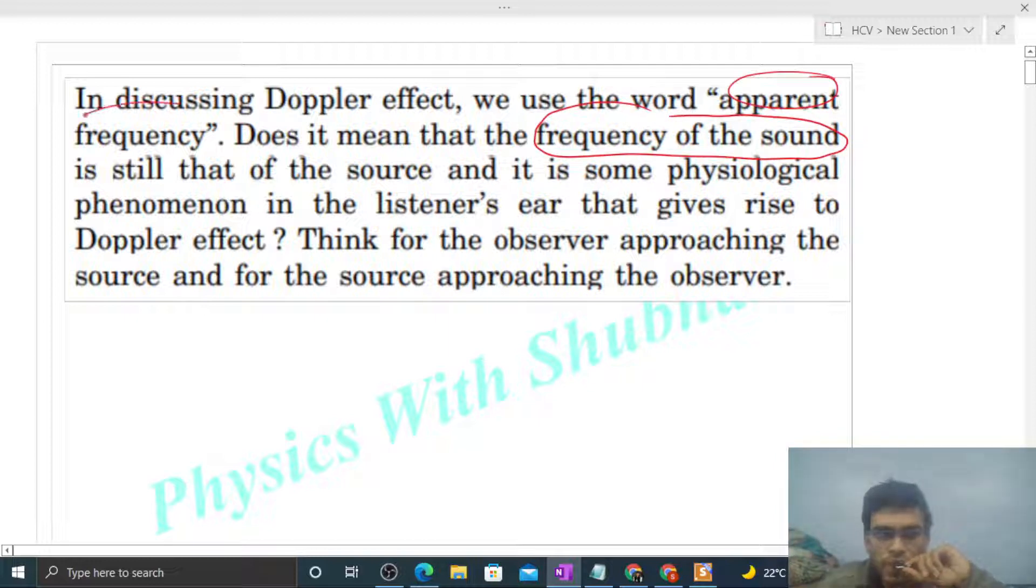So what is the frequency of sound and what is apparent frequency? There is a minor difference which you should know. Let me write the definitions, then we'll discuss. What is actual frequency of sound? That is the number of wave cycles produced by the source per second.